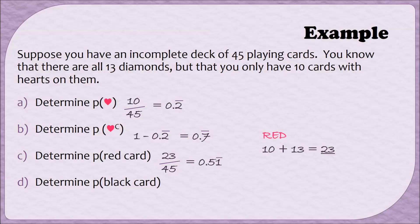To find the probability of drawing a black card, now I need to figure out how many black cards are in the deck. So one way to do that is to take the total number of cards and subtract the number of red cards. So 45 minus 23 will give me 22. So the probability of a black card is 22 out of 45, which, when I turn into a decimal, will give me 0.4 with a repeating 8. Another way that I could have figured out the answer to part D is by subtracting my answer to part C from 1. In other words, if I did 1 minus 0.5 repeating 1s, I would end up with 0.4 repeating 8s. Or, 1 minus 23/45 would give me 22/45.